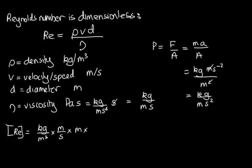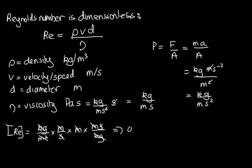Now we have to divide by the viscosity, so we multiply by the inverse — that's metre seconds over kilograms. Now let's cancel out all our common factors: kilograms with kilograms, metres cubed with 1, 2, 3 metres on the top — these all cancel. Seconds on the top and seconds on the bottom — these cancel too.